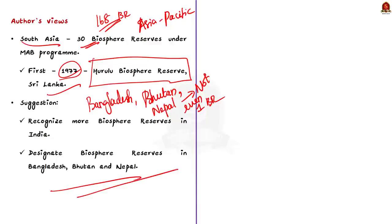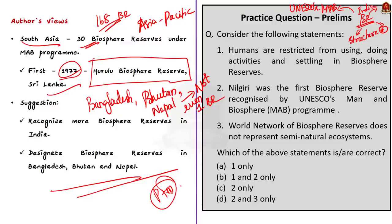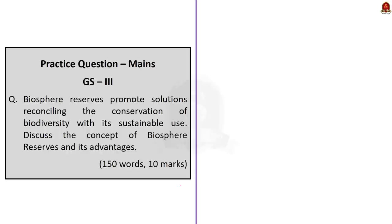The author concludes with the suggestion of recognizing more biosphere reserves in India and designating biosphere reserves in Bangladesh, Bhutan, and Nepal. In this discussion we covered what are biosphere reserves, their structure, and the importance of biosphere reserves, as well as biosphere reserves in India and those recognized under the UNESCO Man and Biosphere Reserve program. Each and every point in this discussion is going to be very much relevant for your prelims as well as mains.